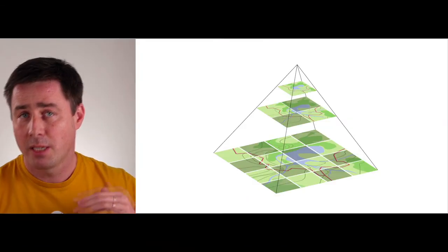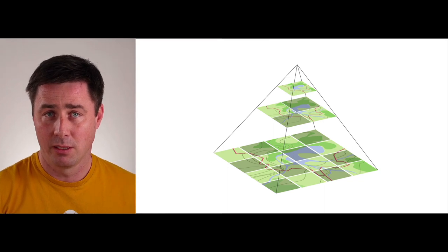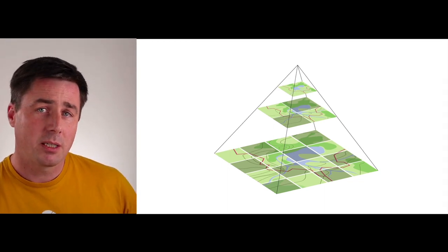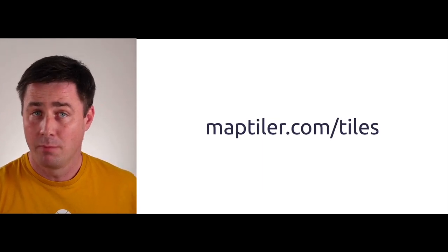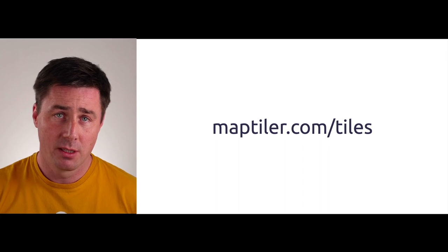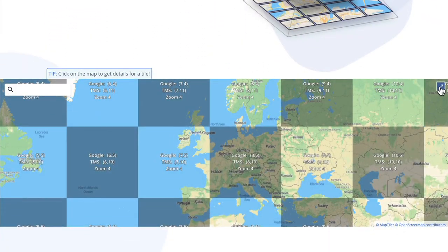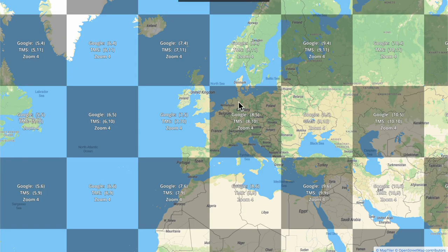To sum it up for today: most web maps use map tiles made in Mercator projection. Map tiles are pre-generated small parts of the entire world map. They show different amounts of detail depending on the zoom level, which represent the floor level of the pyramid. The map tiles allow users to interact with the map without loading a huge global dataset. At maptiler.com/tiles we have prepared for you an interactive tool showing the zoom level numbers and latitude and longitude area for any map tile you select.